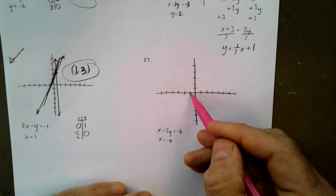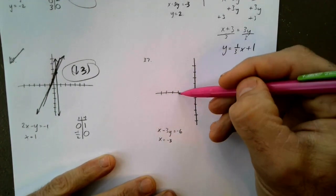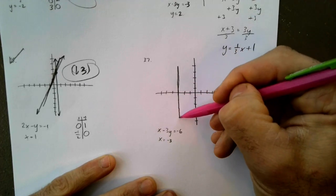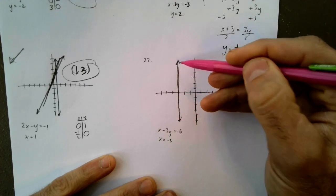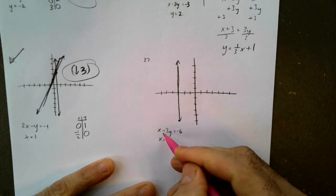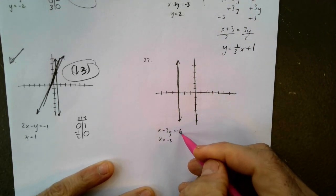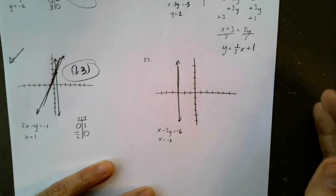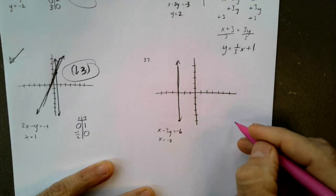Okay. x equals negative 3. 1, 2, 3 over. Vertical line. Oh, yeah. That's looking good. Okay. And then I'm going to do x minus 3y equals negative 6. And let's do intercepts.